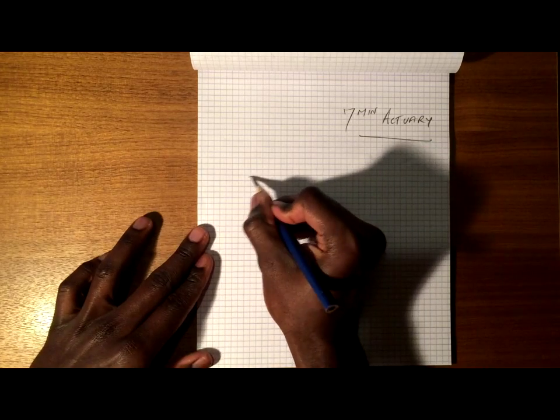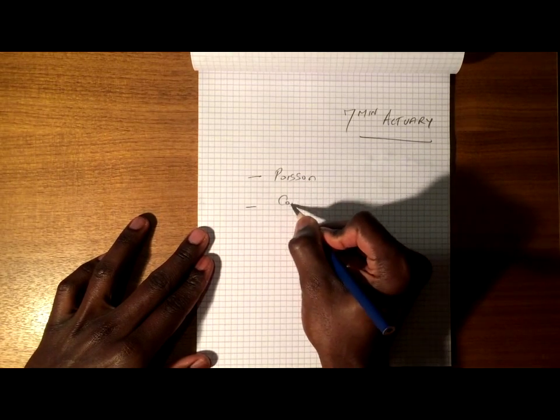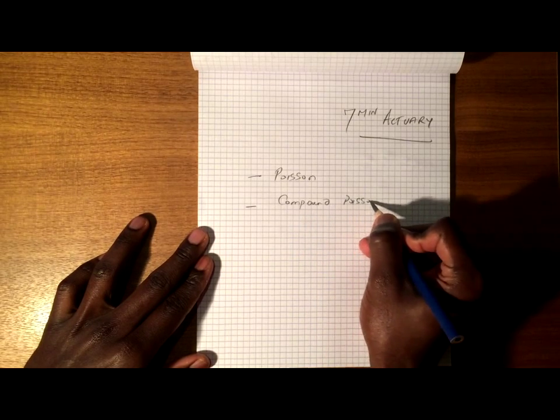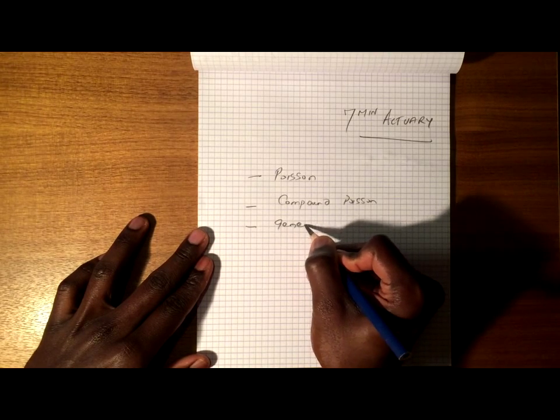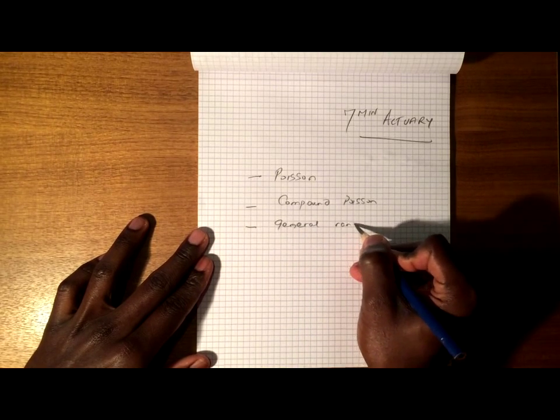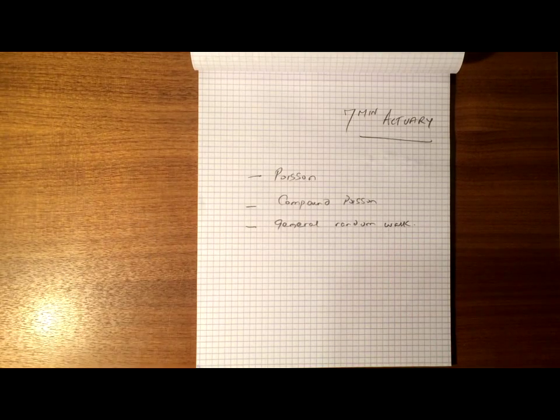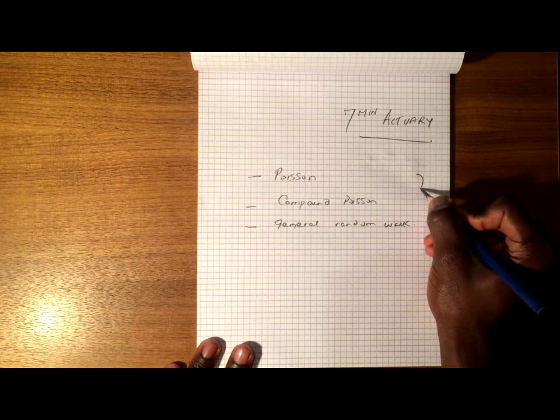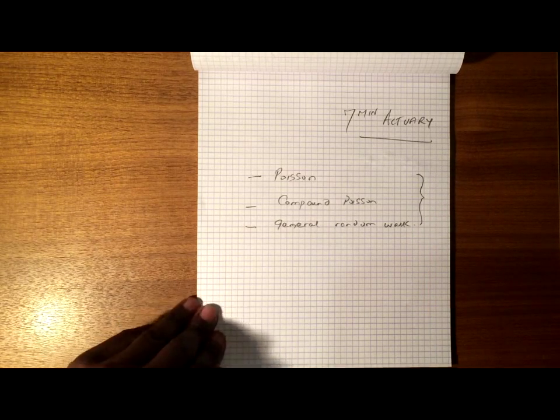In particular we're going to be looking at a Poisson process, a compound Poisson process, and a general random walk. Now these are all different types of stochastic processes and we're going to cover some of the properties of these stochastic processes. So let's make a start.